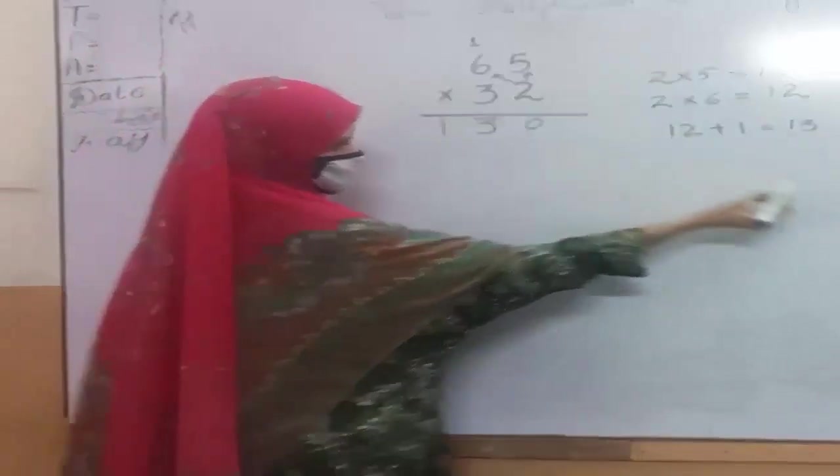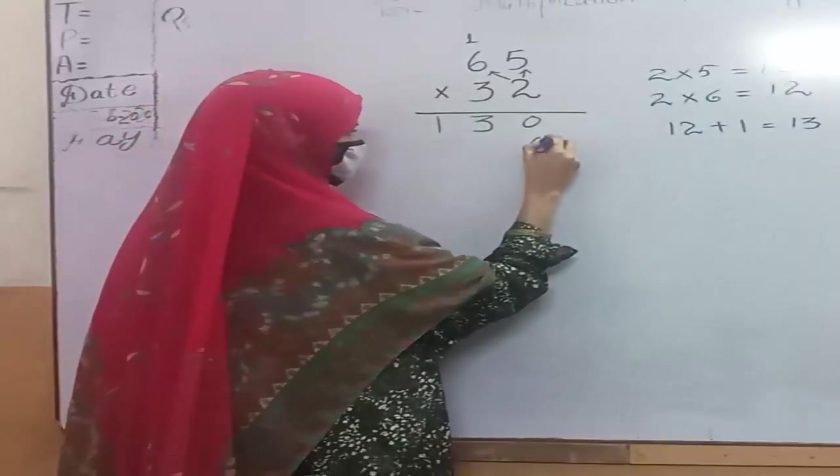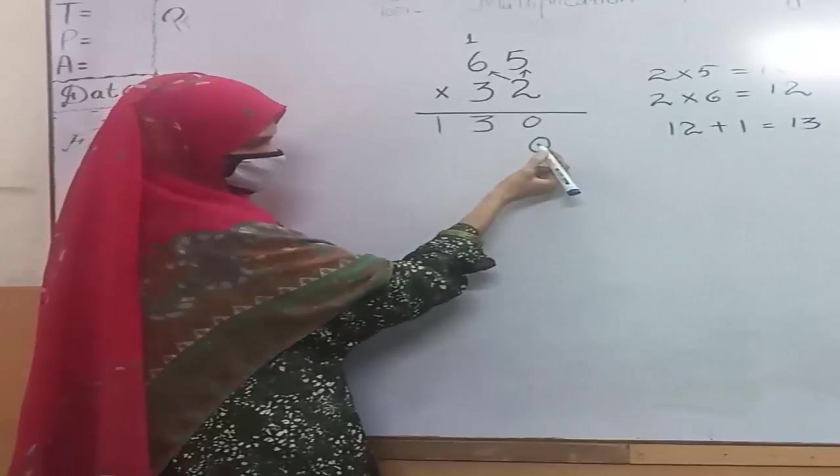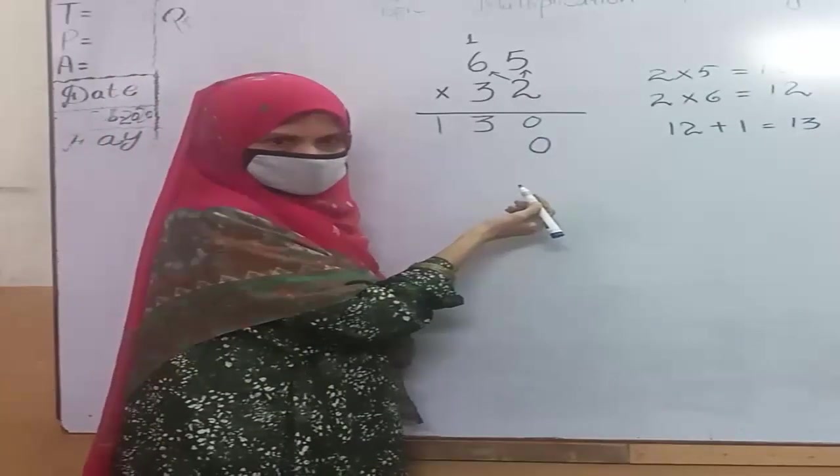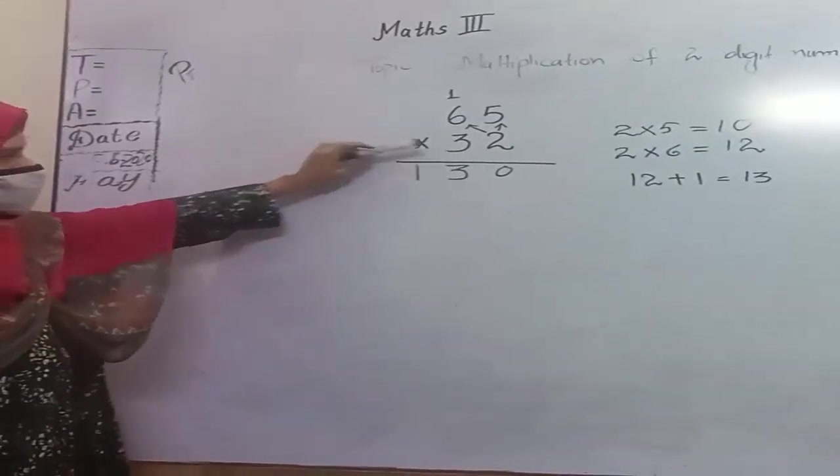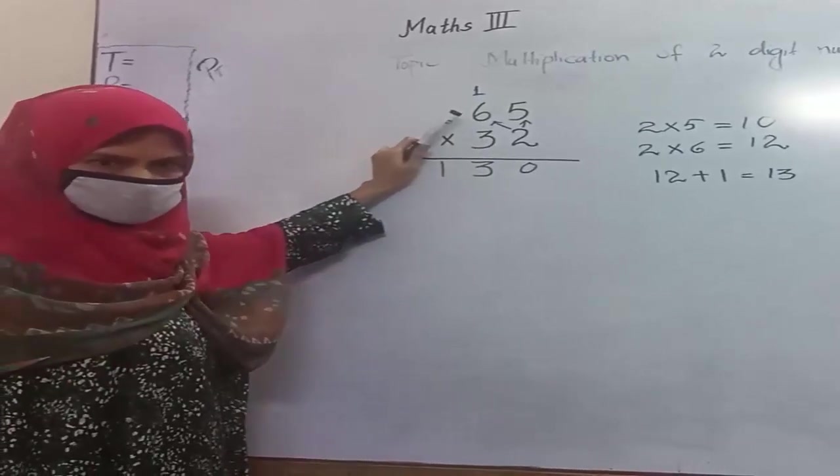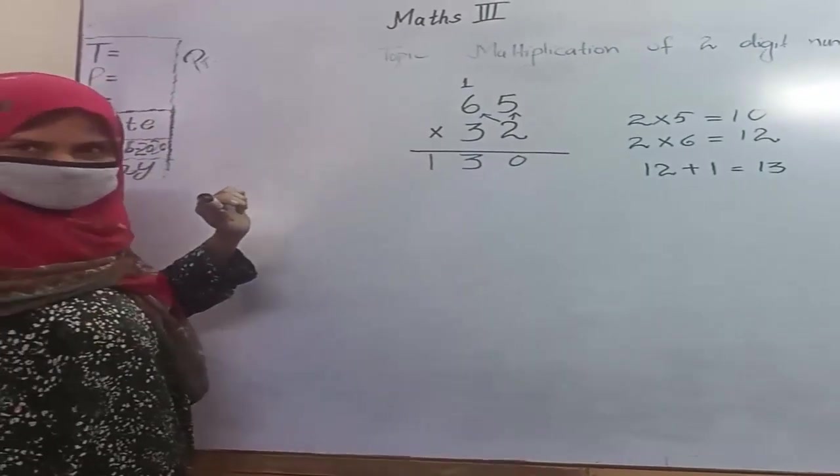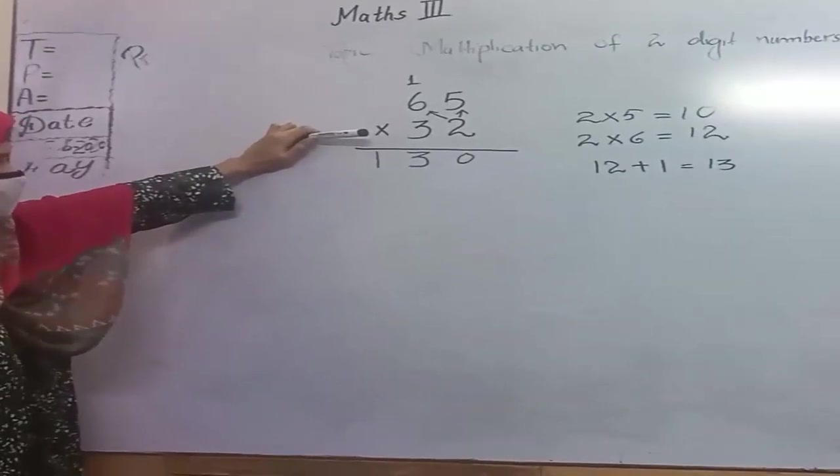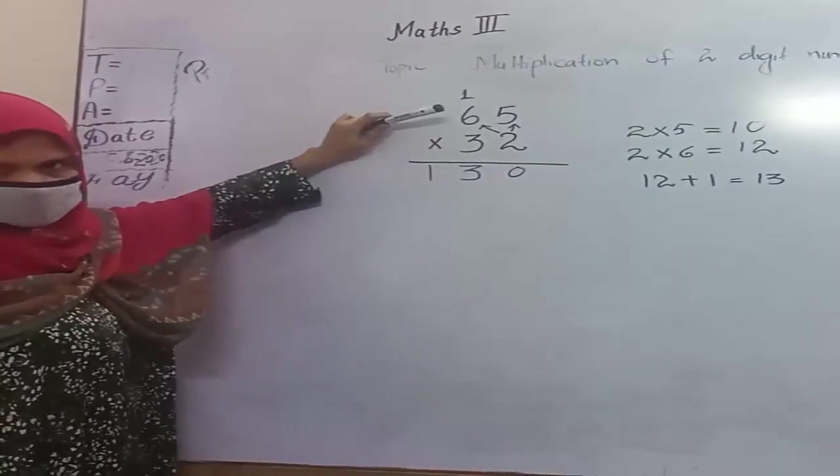We start step 2 and add 0. It allows us to move to the tens place. Dear friends, now we have completed the ones value multiplication. Now we have completed the first step, multiplication of 2 by all of the numbers.